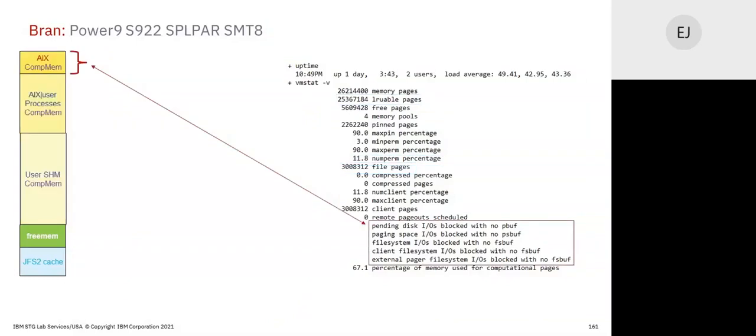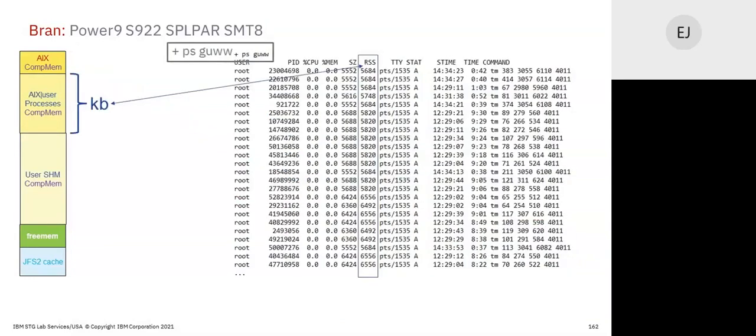AIX has lots of buffers — p_buff, ps_buff, fs_buffs — some pinned, some dynamically allocated. From ps -g, the RSS (Resident Set Size) is the size of processes with shared instruction images included. These are all clone processes running the same code with different data — a little different in size, but they're all clones. Most workloads are comprised of clones.